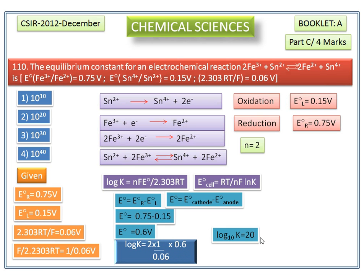By taking antilogarithm, we get K value is equal to 10 to the power of 20. Now we check the options. In the given options, the second option has 10 to the power of 20.